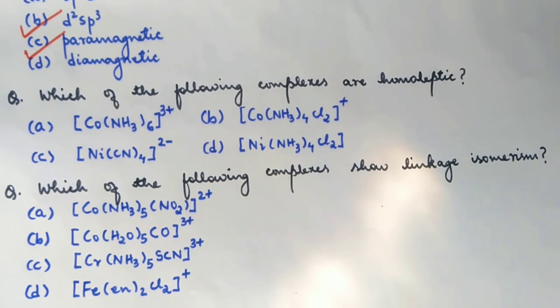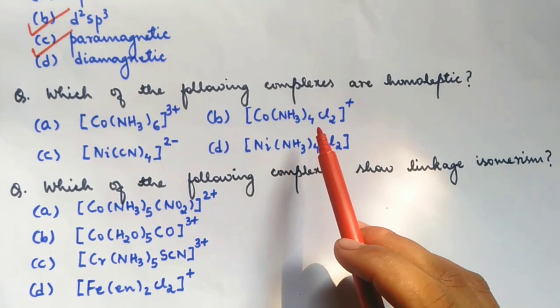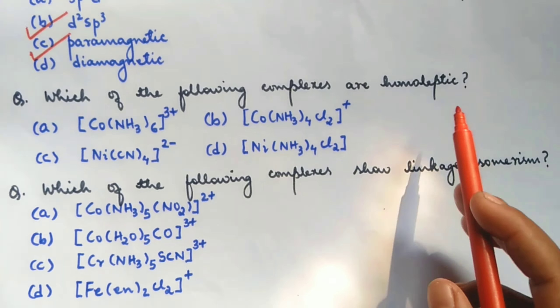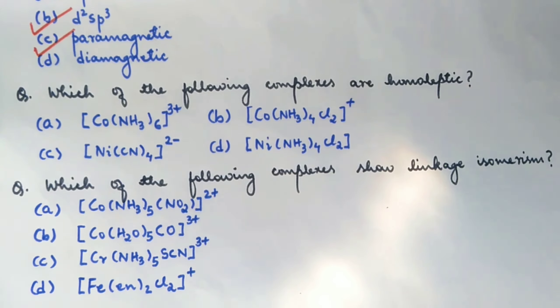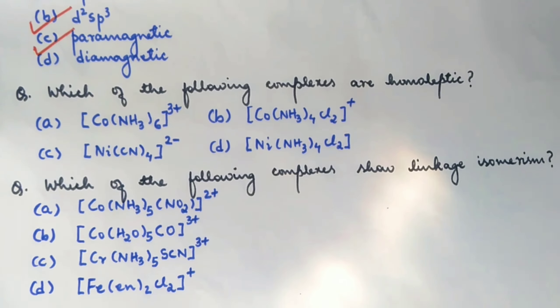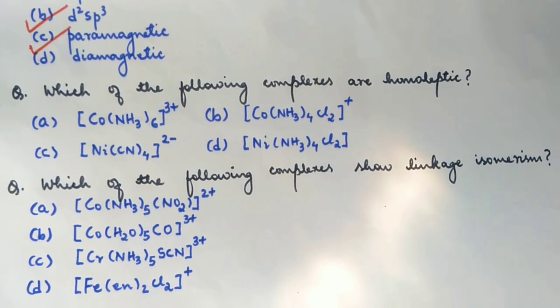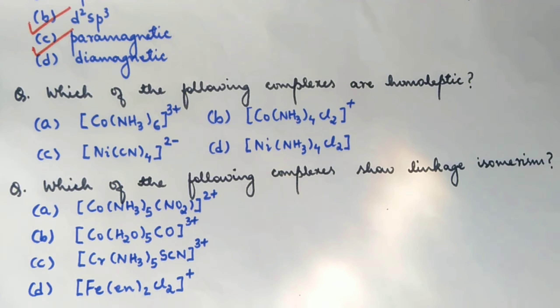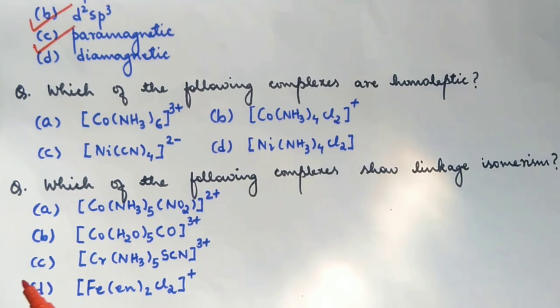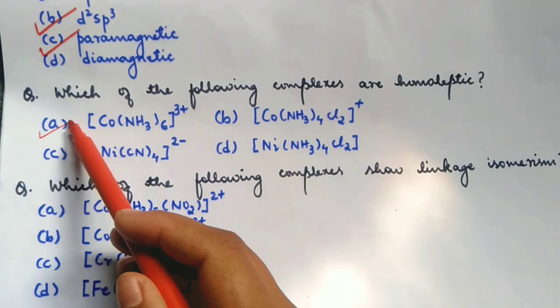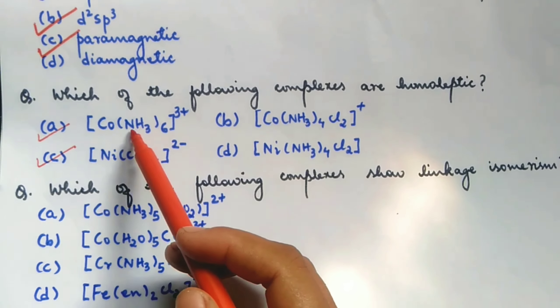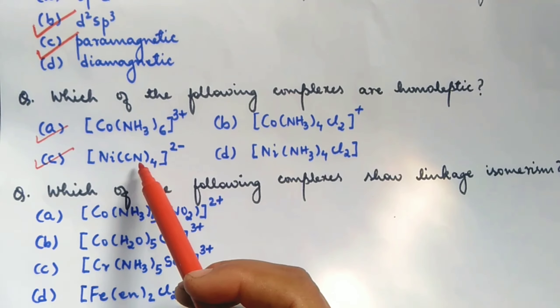Another question. Which of the following complexes are homoleptic? Now, homo means same. So, homoleptic complexes are those complexes which have the same type of ligand. So, among these 4 complexes, A and C are the correct options because here we have same type of ligand.